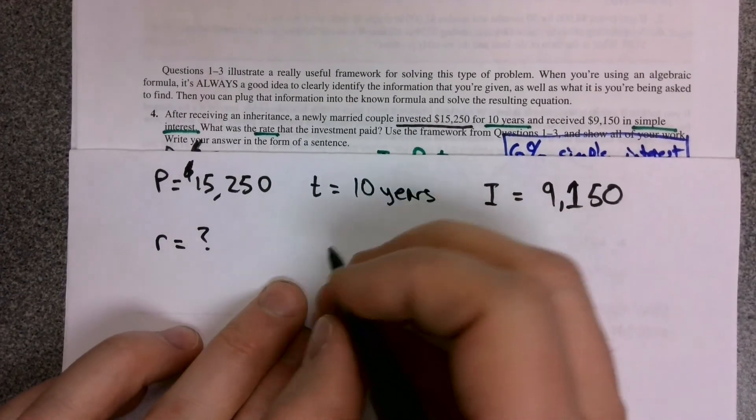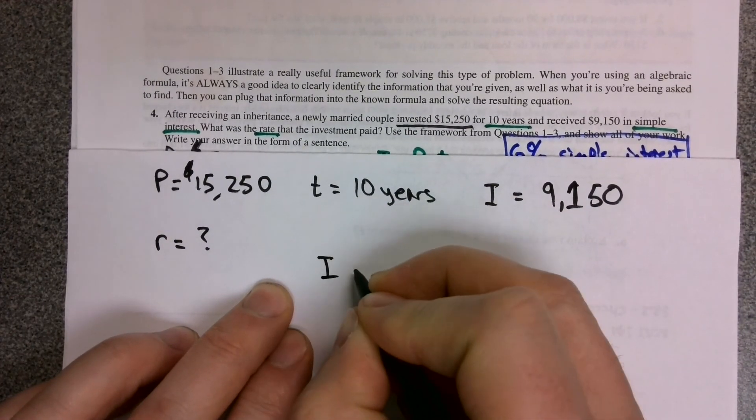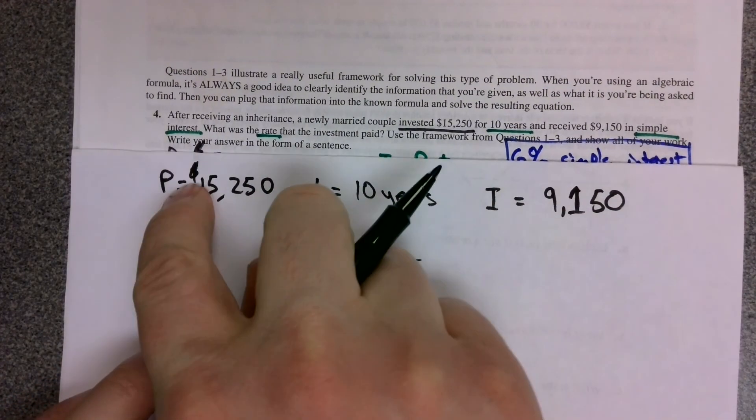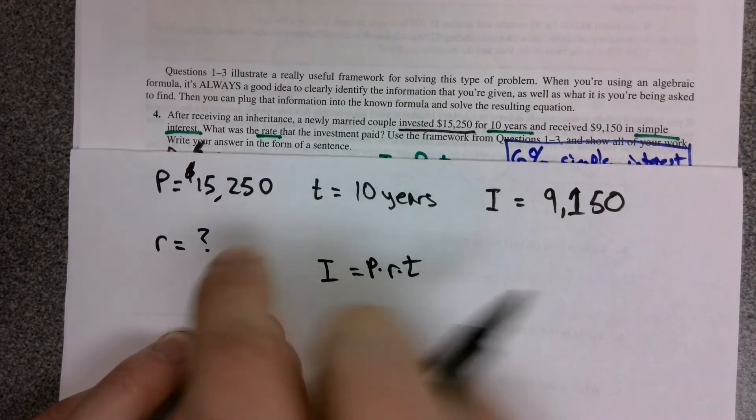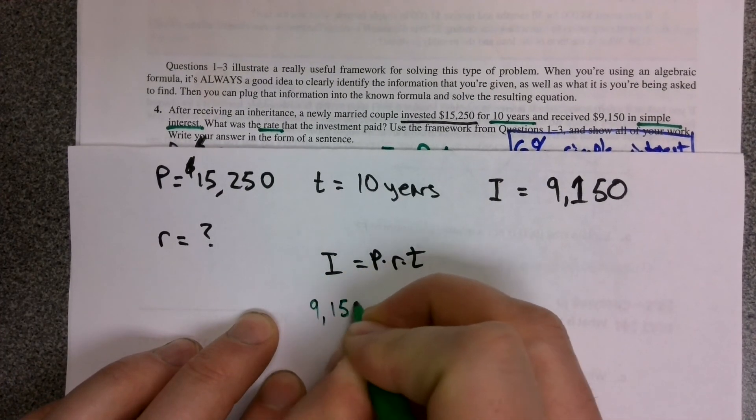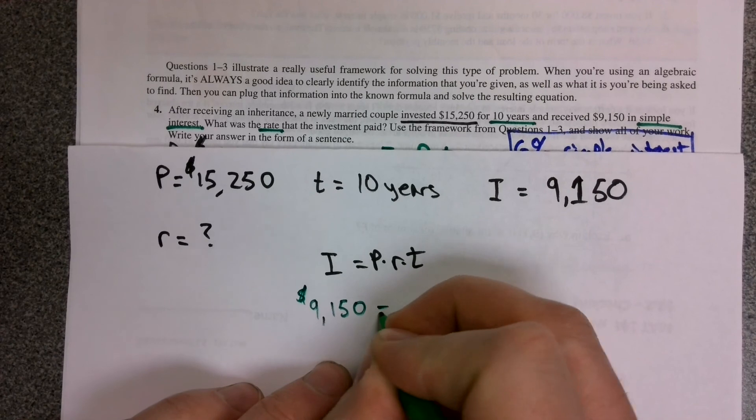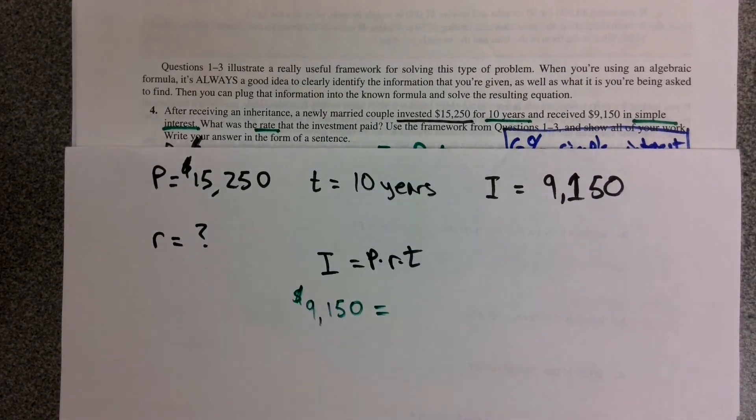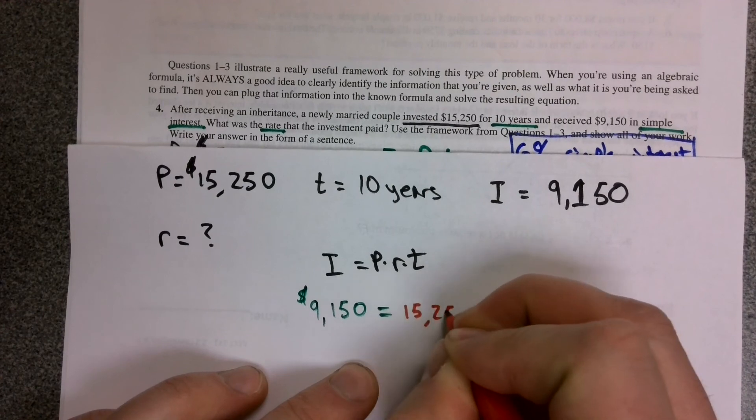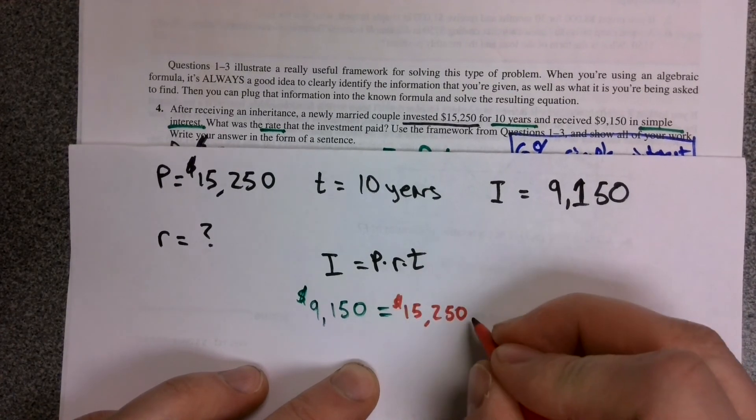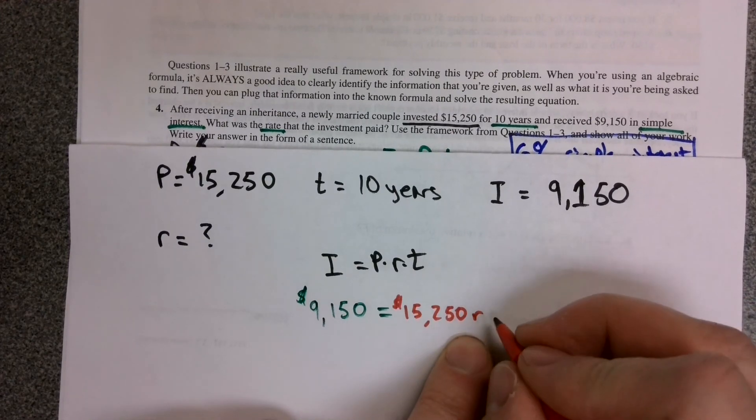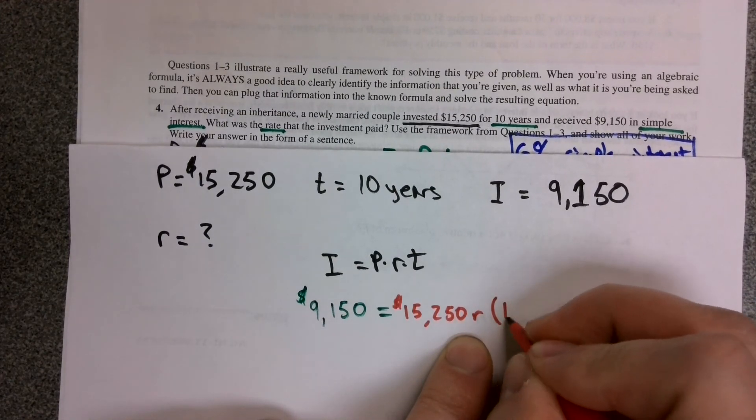Notice we were very careful to note that it was simple interest. So the thing we're looking for is R. We go right to our simple interest formula, I equals P times R times T. Plug in the pieces we have and solve for the missing piece, that R. So we know that the total interest earned was $9,150, that the principal we invested was $15,250, we don't know what that interest rate was. Remember, this is going to be a decimal when we solve for it. And we knew we invested this for 10 years.